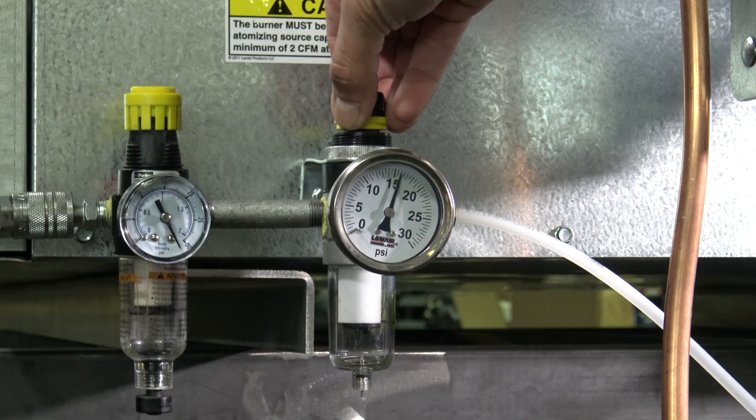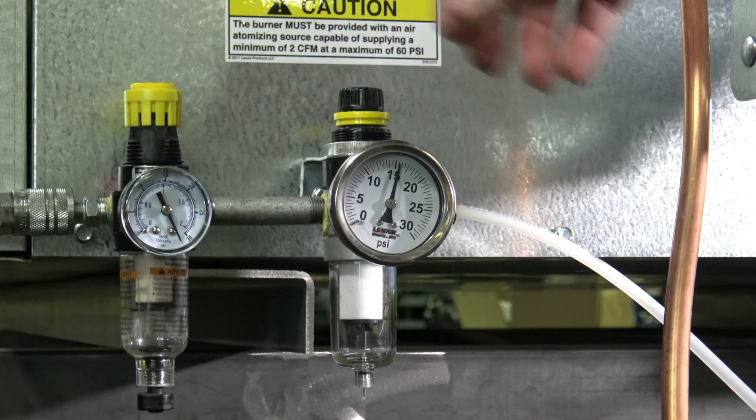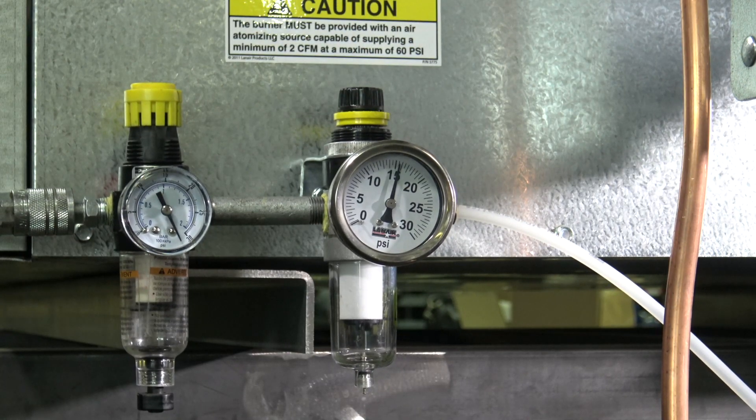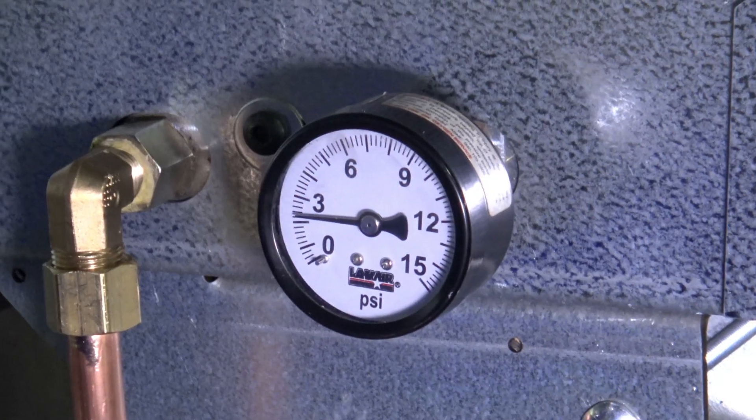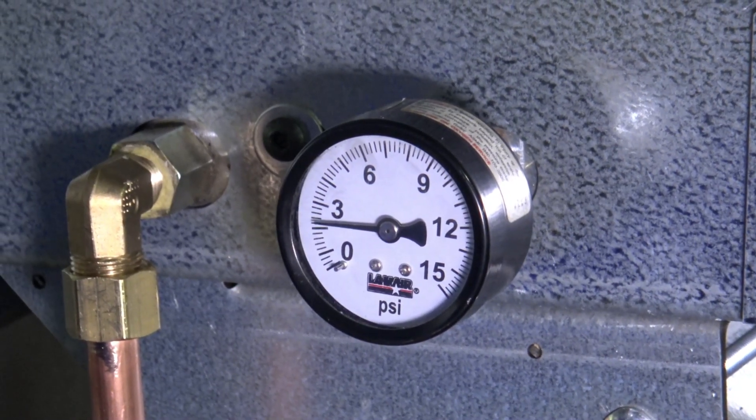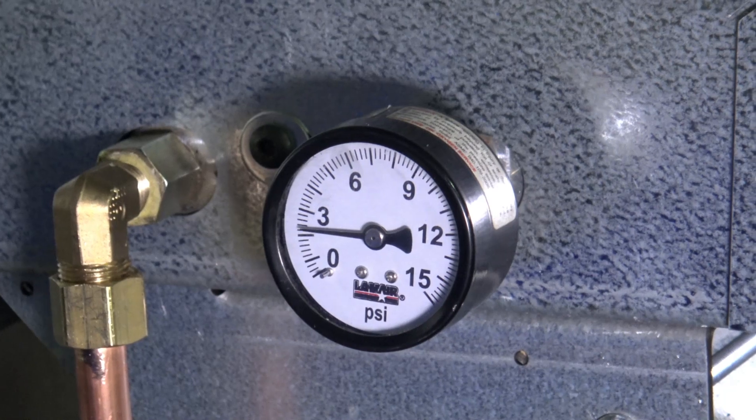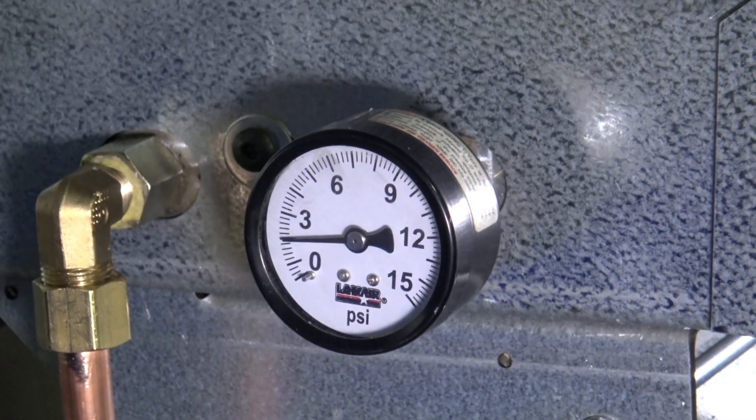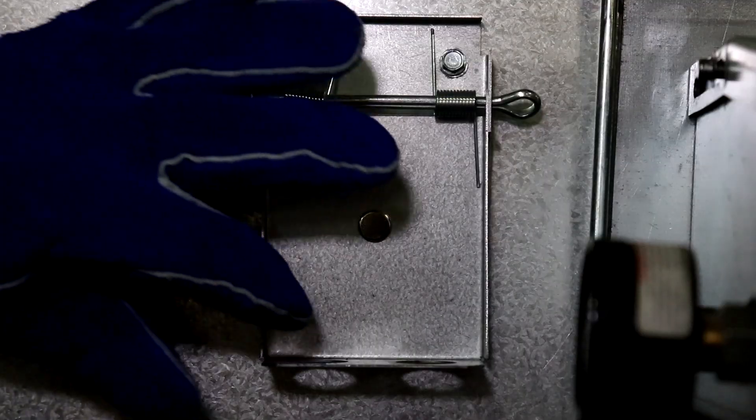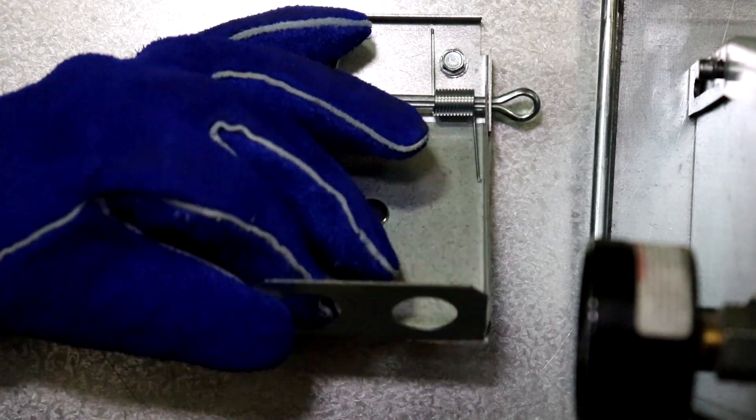Periodically inspect the air pressure regulators to ensure that they are free of moisture and debris, as these contaminants will cause a malfunction of or damage to the unit. Next, ensure that the appropriate oil pressure is being delivered to the burner, based on the product instruction manual's recommendation for your model. Once these initial settings have been confirmed, use a gloved hand to open the flame inspection port cover of the heater cabinet, and visually inspect the flame.